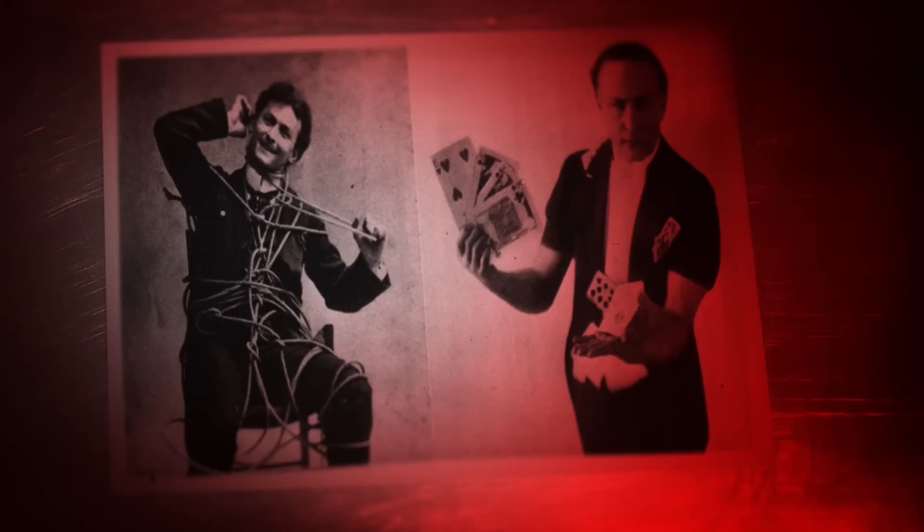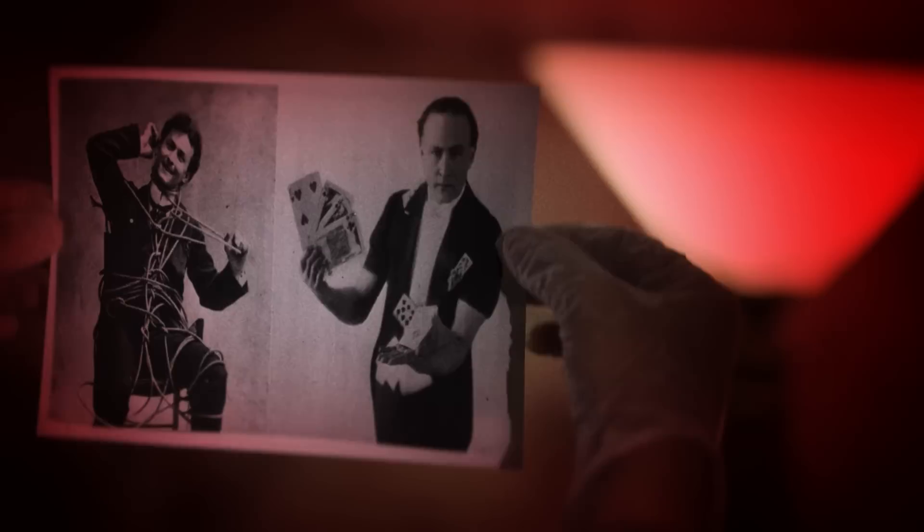In 1899, Harry Houdini set out a challenge. He said that no trick could fool him if he saw it three times in a row. Many magicians attempted to fool him, but none were successful until a magician called Dai Vernon stepped forward.